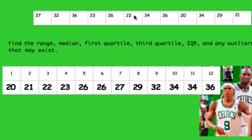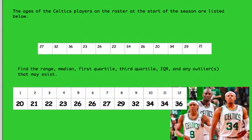First, we need to arrange this information in order — it's a mess. You can see the numbers above indicating how many data values there are. At the start of the season there are 12 people on the team, and their ages are arranged from lowest to greatest. The tallest guy is Kevin Garnett — he's 36 years old, the oldest. Paul Pierce is 34, and Rajon Rondo is only about 26.